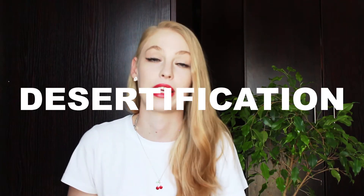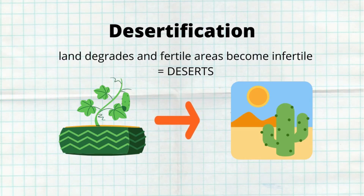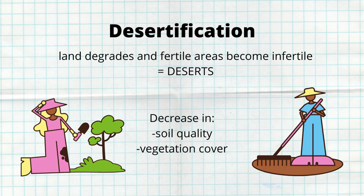Drought is a major problem because it can lead to something called desertification. Desertification happens when the quality of the land decreases — in other words, once fertile land now becomes infertile. This means that the soil degrades, and if the soil quality degrades, vegetation cover will decrease.